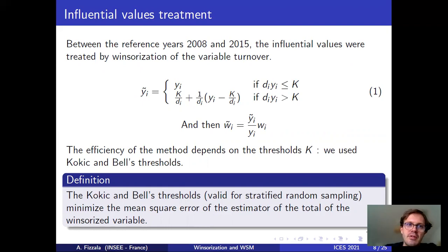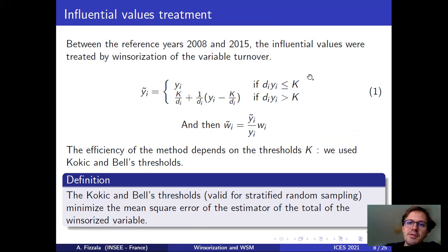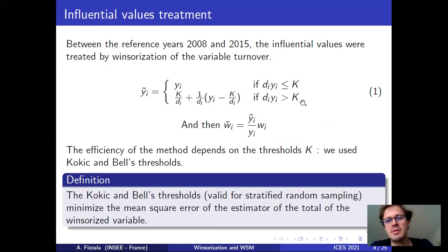Now I'm going to speak about the influential value adjustment by Winsorization. Basically, it works with a formula involving thresholds — the little K on the slide. If an enterprise has a contribution to the estimator which is under the threshold, we don't modify the initial value. That is the case for the majority of enterprises.